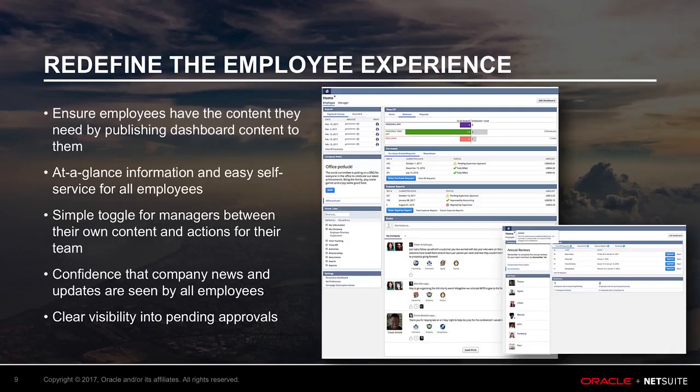Employee manager toggle ensures that key information and tasks relevant to your role are available at your fingertips. If you are an individual contributor, you'll have access to tasks and information pertaining to your role, such as my time off, my expense reports, my purchases, and so on. If you manage direct reports, you can access the manager dashboard with an easy toggle. The manager view has tasks and information related to your role as a manager, such as time off request approvals, expense report approvals, and more.